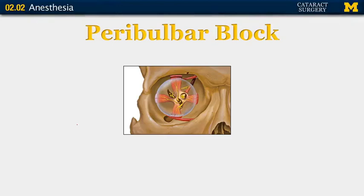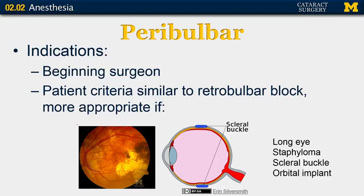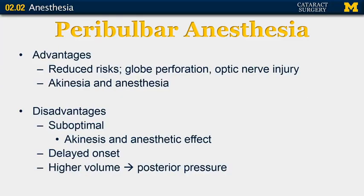Next, we will talk about peribulbar block. This is placed in the extraconal space. Indications include beginning surgeons and similar patient criteria as for a retrobulbar block. It is more appropriate if the patient has a long eye, staphyloma, scleral buckle, or orbital implant. The advantages include reduced risks such as globe perforation and optic nerve injury since you're not entering the intraconal space, while still achieving akinesia and anesthesia. However, the effect may be suboptimal compared to retrobulbar block. Onset is also delayed, and you have to inject a higher volume, which can lead to posterior pressure making the case more difficult.